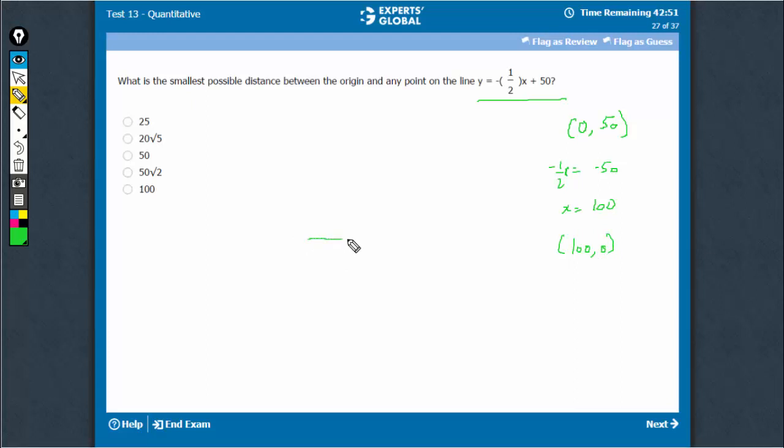Let's draw 100, 0 and 0, 50 on the line. 100, 0 would be somewhere here, 100, 0 and this would be 0, 50. So somewhere here, this is 0, 50.